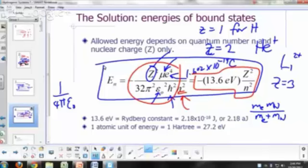That's the allowed energy. Those are the allowed energies for your electron in a hydrogen atom. It depends only on the quantum number N.